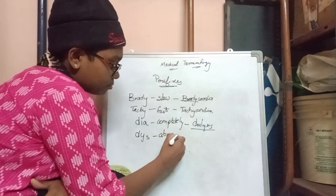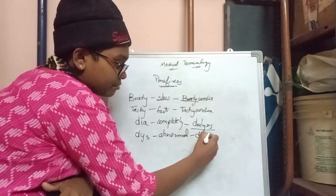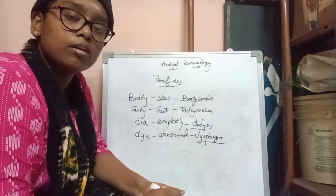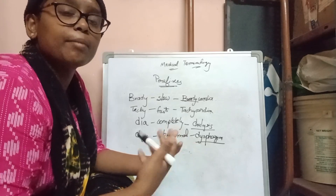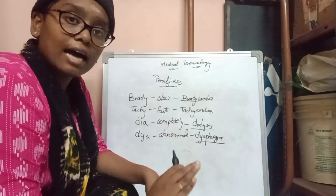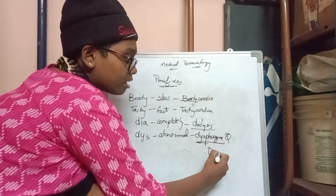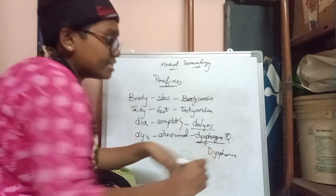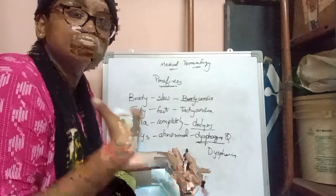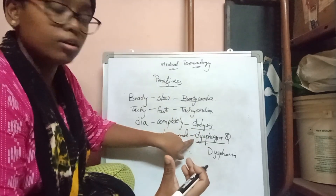The prefix 'dys' means abnormal or difficult. For example, 'dysphagia' means difficulty in swallowing — the inability to swallow. This was actually asked in an interview: what is the difference between dysphagia and dysphasia? Dysphagia is difficulty swallowing, while dysphasia is difficulty speaking, such as blurry or impaired speech.